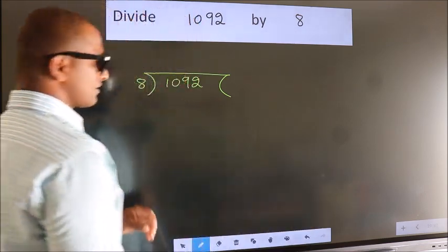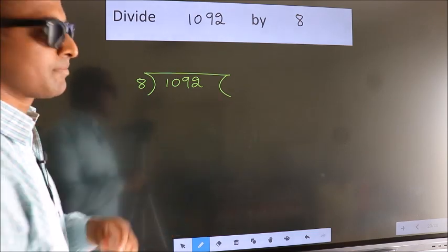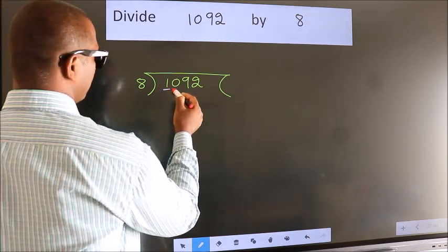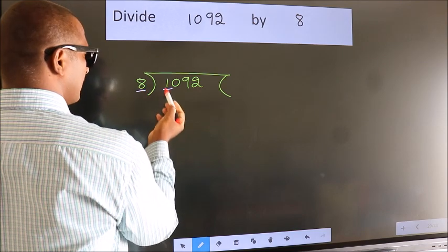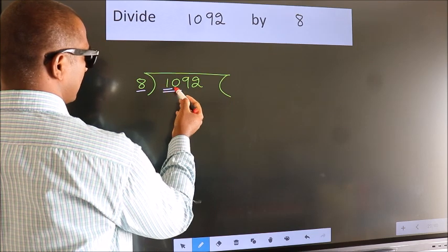This is your step 1. Next, here we have 1, here 8. 1 is smaller than 8, so we should take 2 numbers: 10.